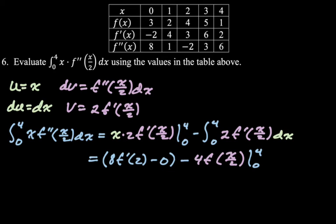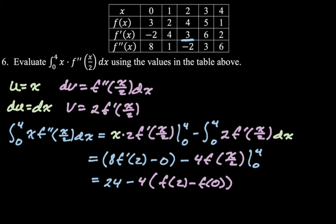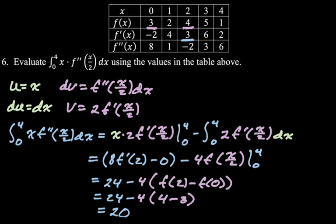Plugging in 4: 4 times 2 is 8, so we get 8 f prime of 2. Plugging in 0 gives 0. Then the remaining integral: there's a factor of 2 again, so minus 4 times the integral of f prime of x over 2 from 0 to 4, which evaluates to 4 times f of x over 2 from 0 to 4, giving f of 2 minus f of 0. From the table: f prime of 2 is 3, f of 2 is 4, f of 0 is 3. So we get 24 minus 4 times 1, giving 20.